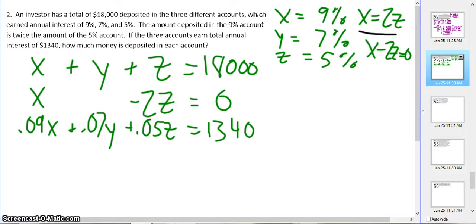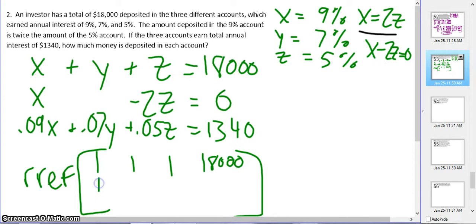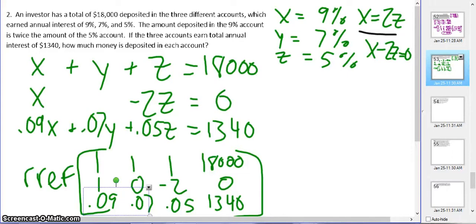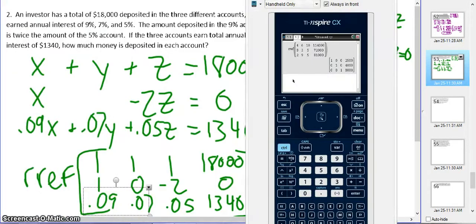Now we're going to write that as an RREF. So we've got 1, 1, 1, 18,000. Then we've got 1, 0, -2, and 0. And then 0.09, 0.07, 0.05, and that's 1,340. When you're doing the percentage questions, usually there's a total amount of money, which is going to just be your XYZ. And then any money that talks about the interest, you've got to actually put the percents in.